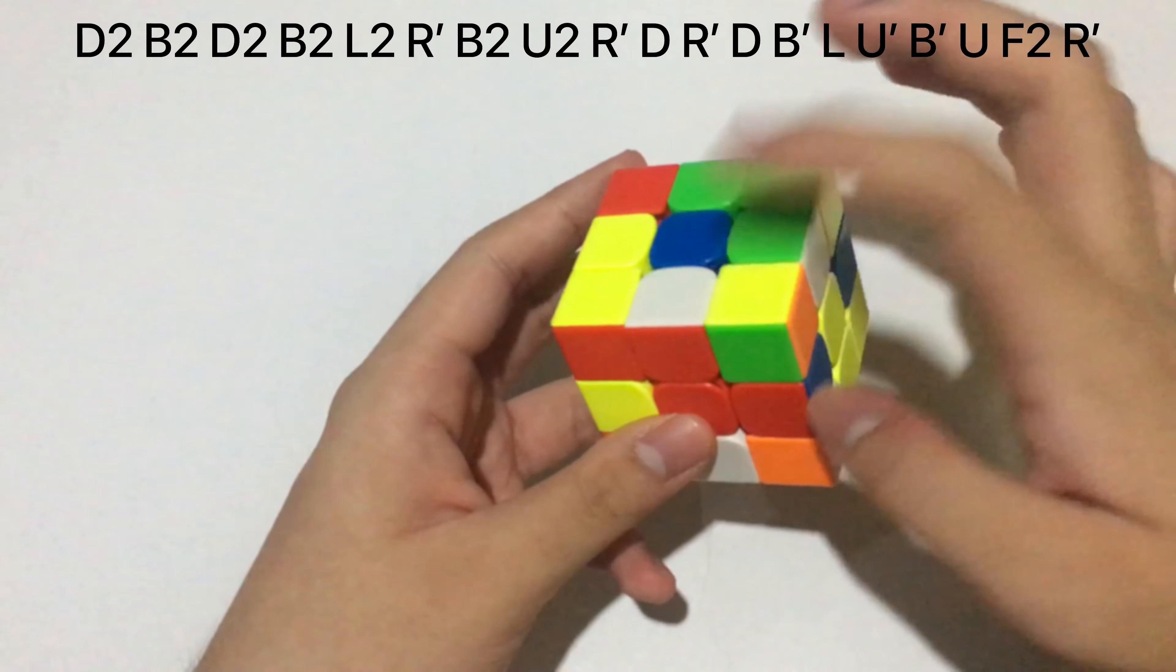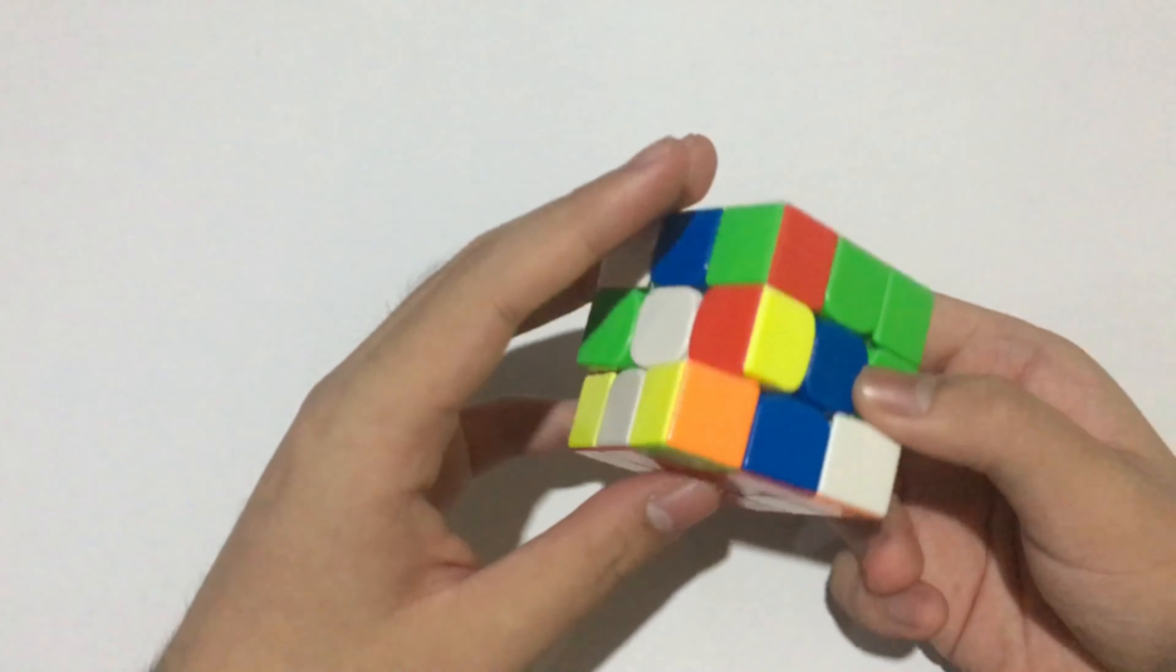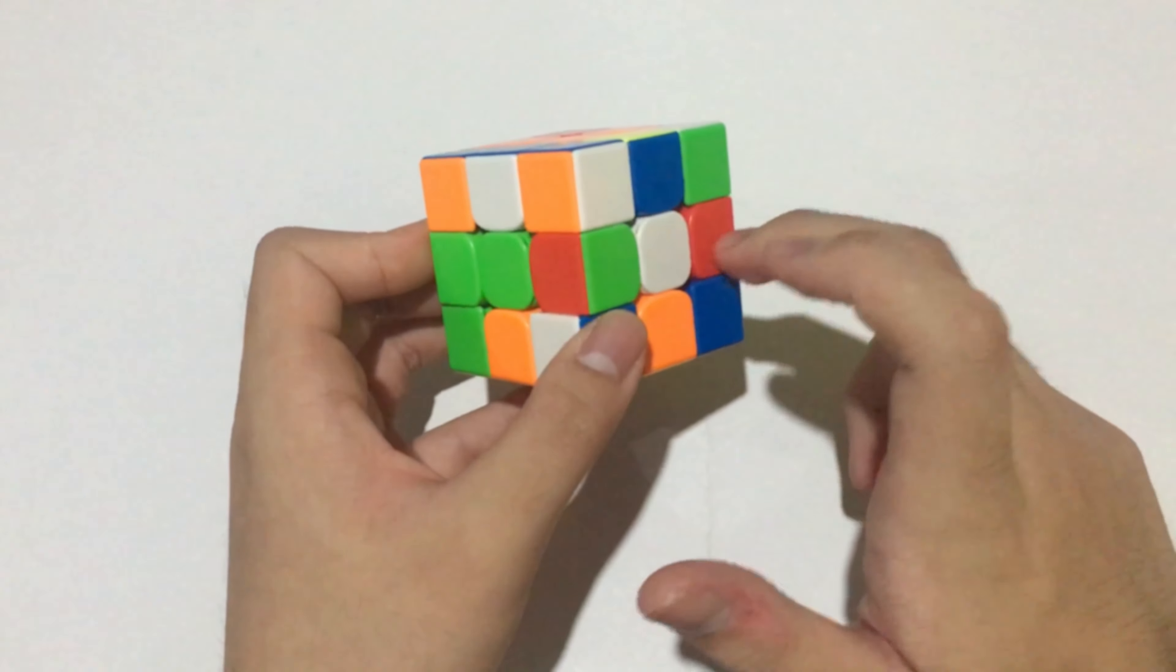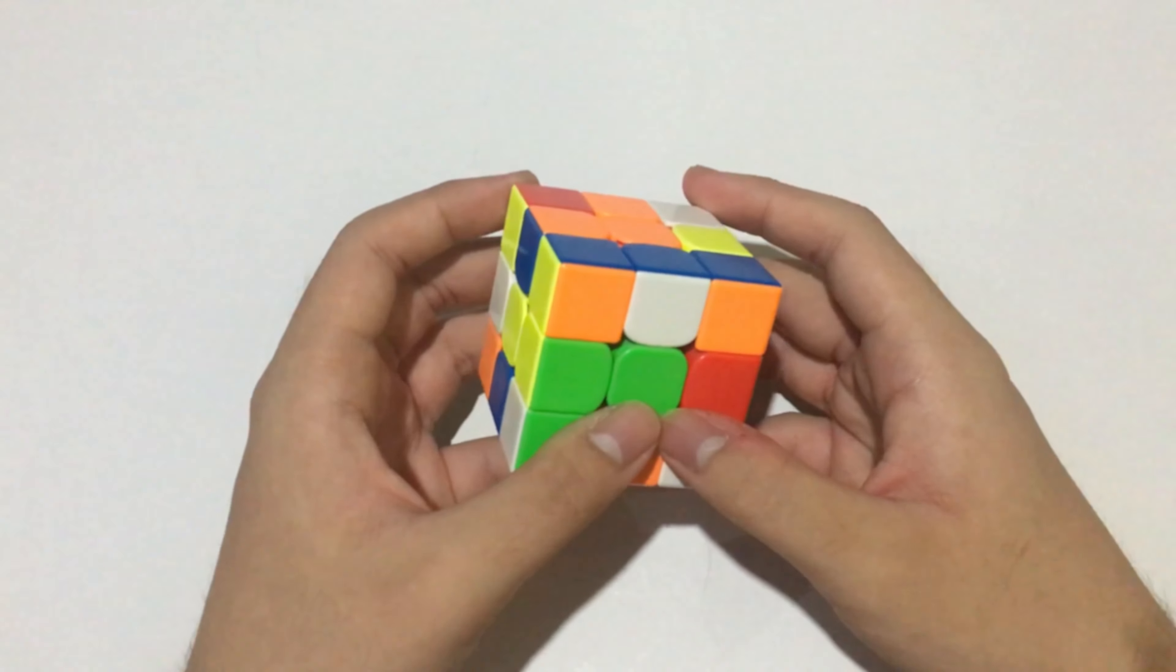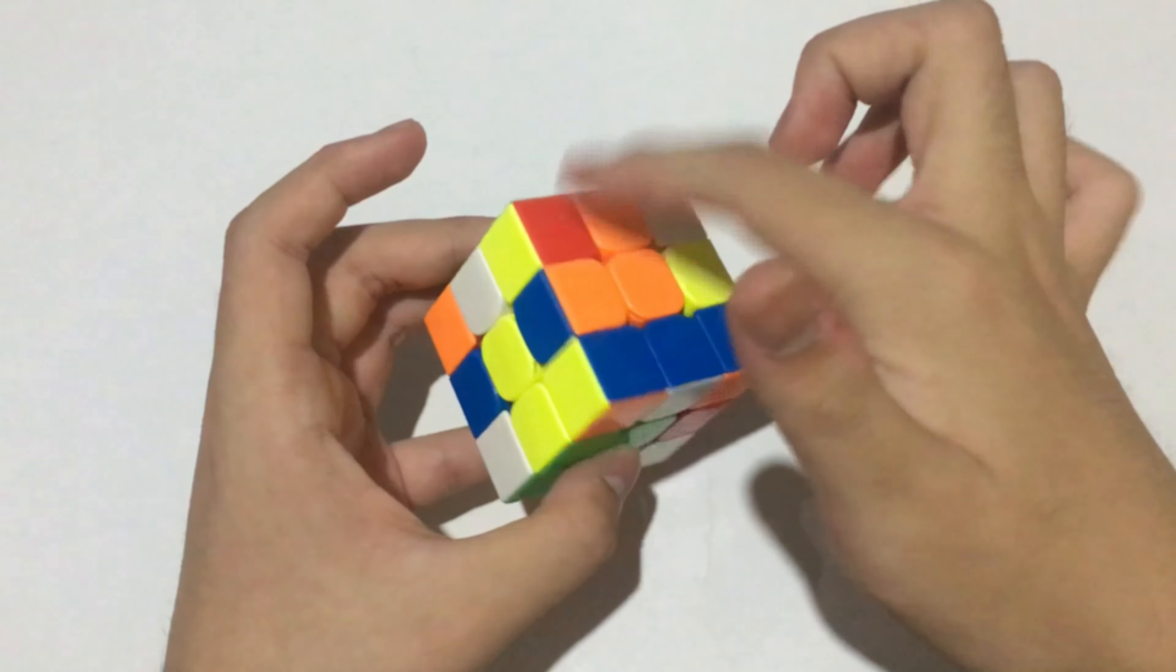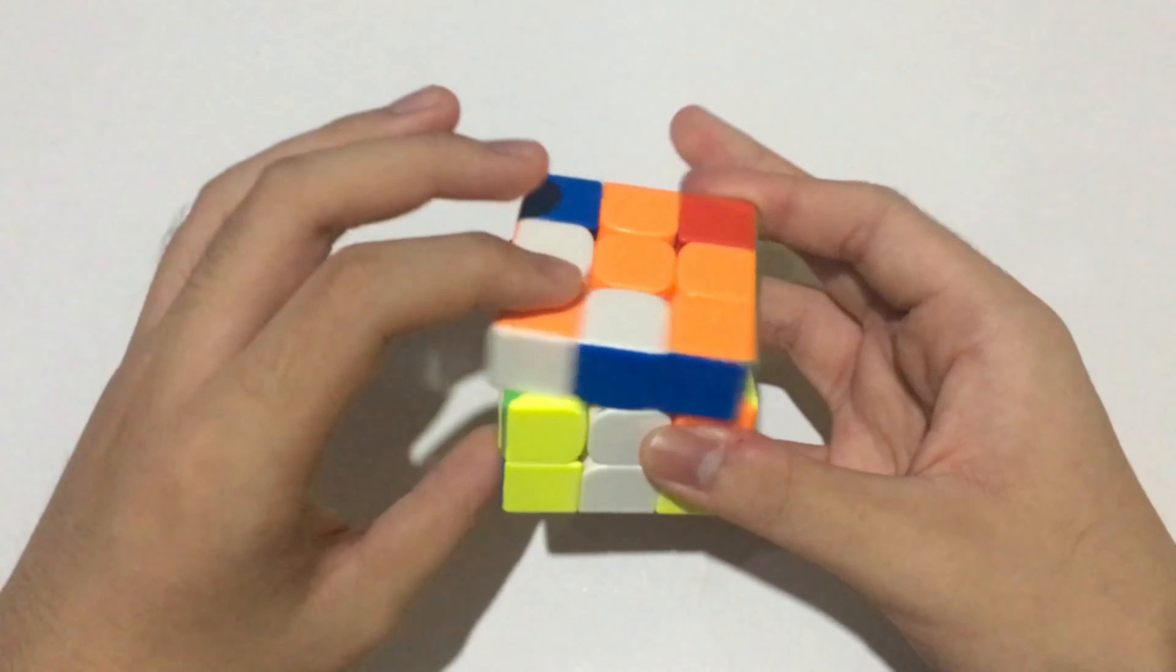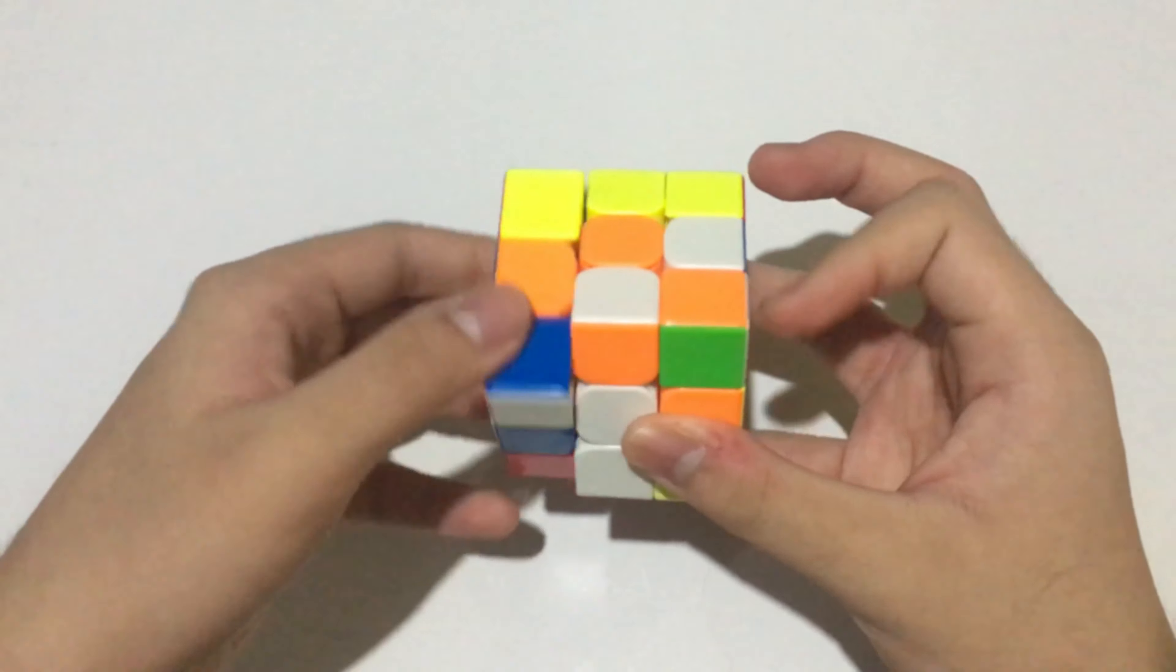As we can see, these two pieces were one move away from being solved, and the other cross pieces are here and here. I also tracked my first pair, which is this edge and this corner. I did the cross like this, aligned the cross, and went straight into solving this pair on the back.